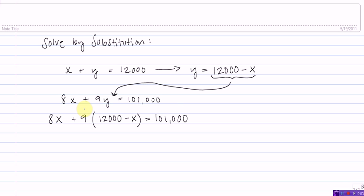Now, I'm going to solve this equation for X by first distributing the 9. So, we have 8X plus 108,000 minus 9X equals 101,000.